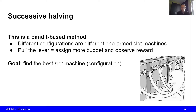Successive halving is a form of a bandit-based method. Think of it like being at a casino with different slot machines: pulling one lever either gives you a reward or you lose your money. Each slot machine is a hyperparameter configuration, and pulling the lever means allocating some training budget to that configuration. What you get back is its performance — either good or bad. The goal is to find the best slot machine, which is the best configuration.